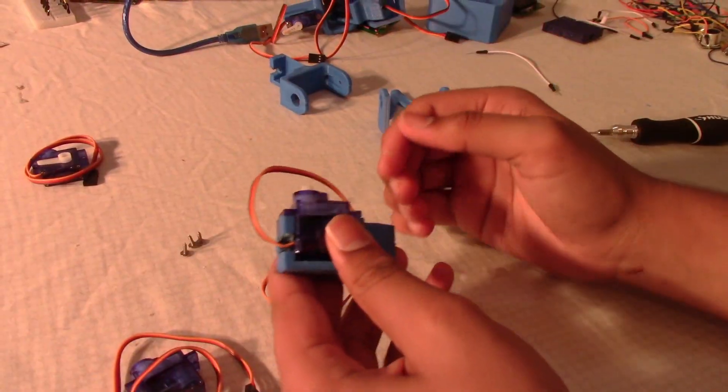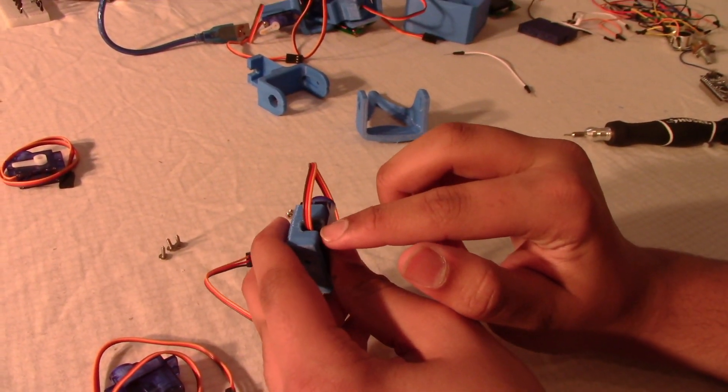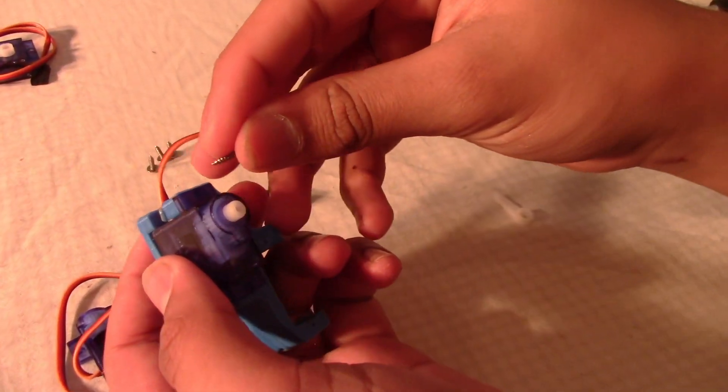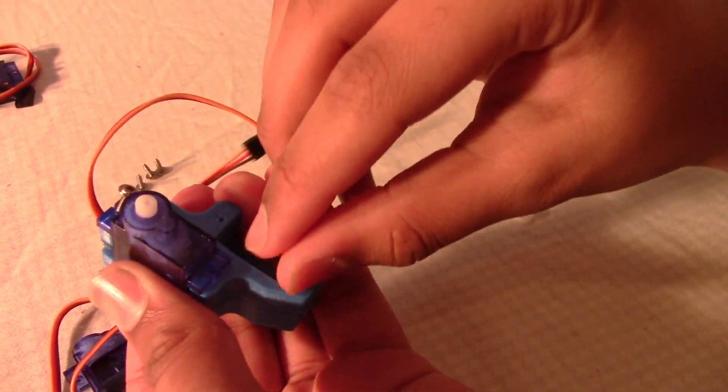I recommend using a hot knife or soldering iron to melt this part around. Now the next step is to screw it down - add one screw there and one screw over here.